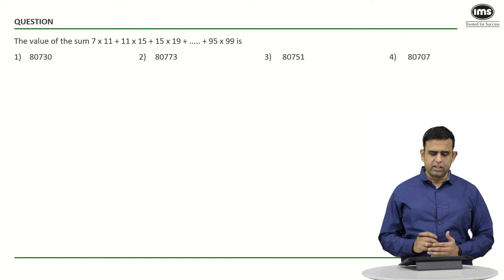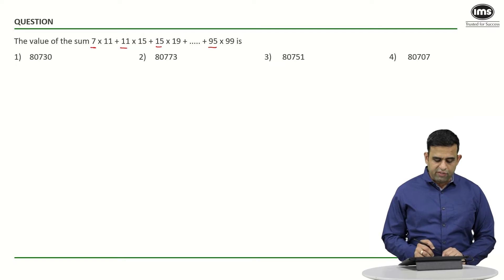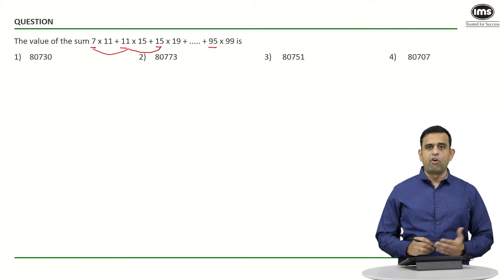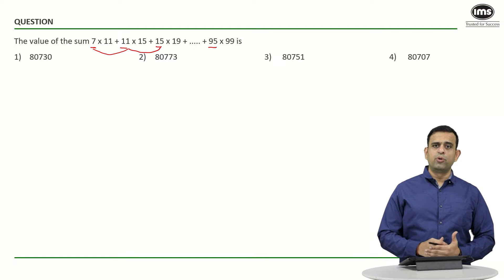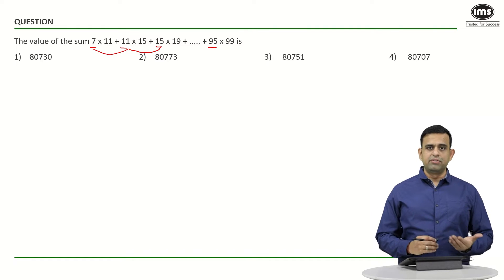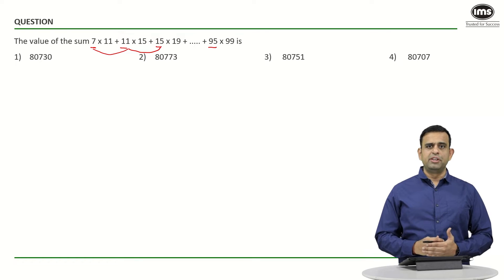If we look at the first term of each factor — 7, 11, 15, up to 95 — these follow an arithmetic progression where 11 is 4 more than 7, and 15 is 4 more than 11, and so on. So we have an AP with first term 7 and common difference 4.